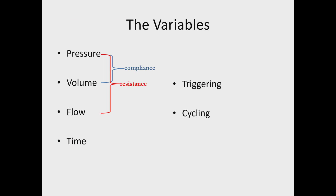We have certain variables that are within our control, and that's really pressure, volume, flow, and time. When you talk about pressure and flow, we're really talking about resistance, and when we're talking about pressure and volume, those are really the components of compliance.